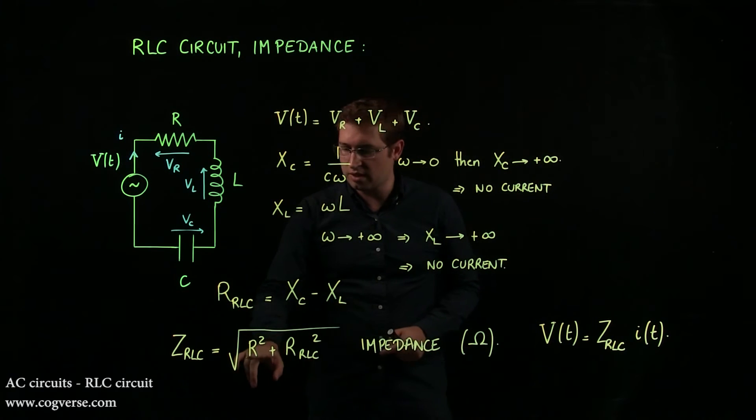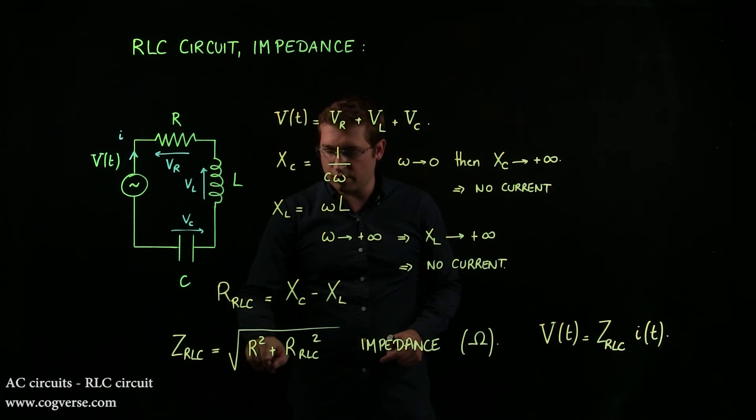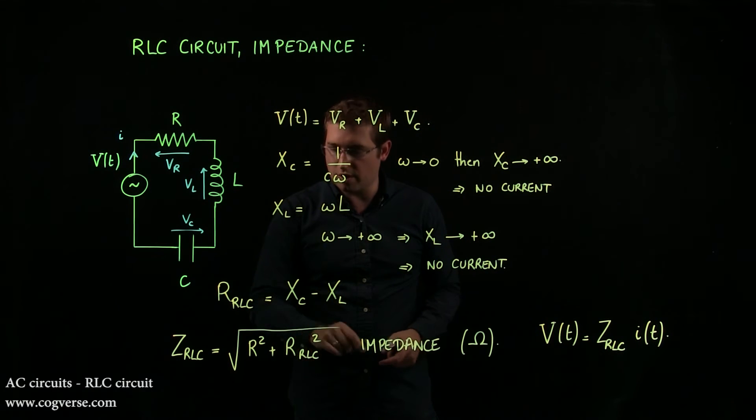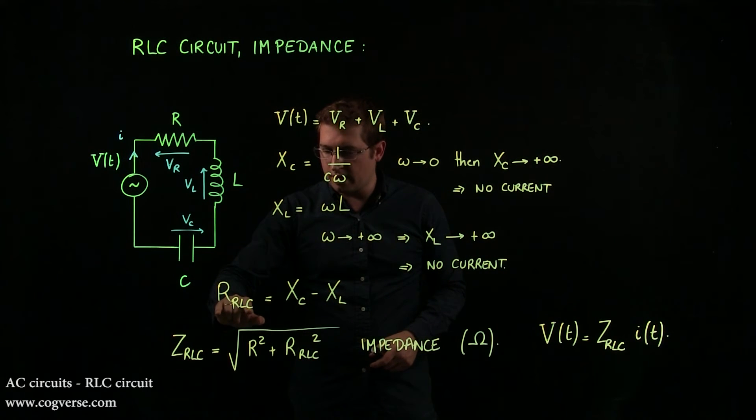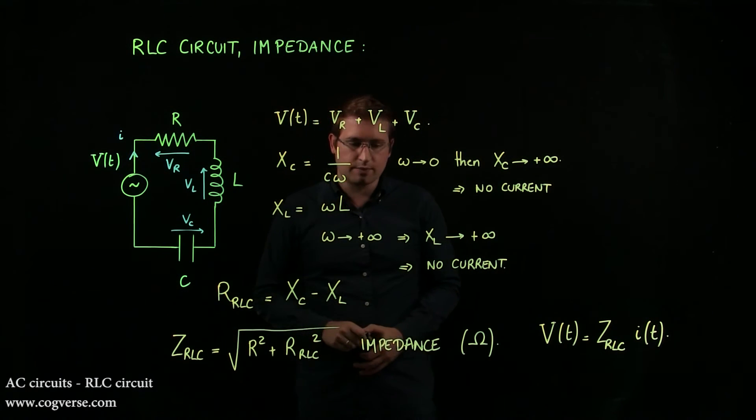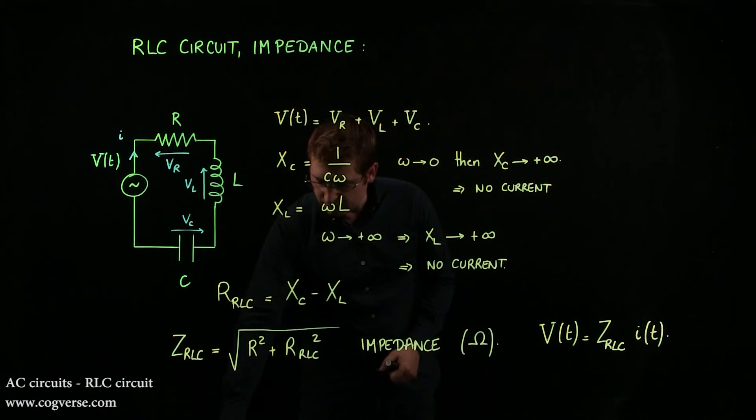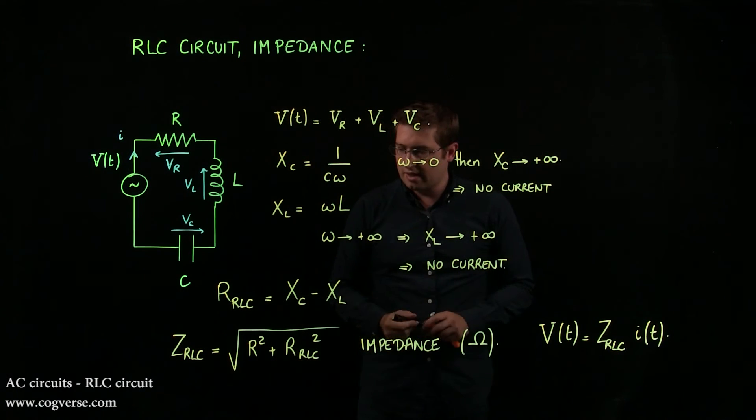And that's a very nice and condensed way of relating voltage to current. But to define this relationship, we need the impedance, which is itself defined as square root of R squared plus RRLC squared, where RRLC is the reactance of the RLC circuit.